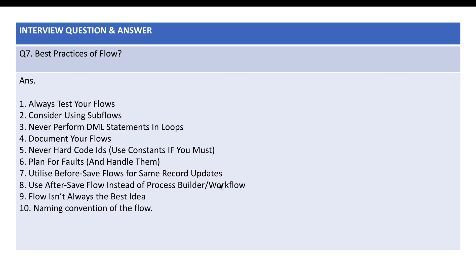Use after-save flow instead of Process Builder or Workflow — after-save means when you will get a record ID. Also, one very important point: flow isn't always the best idea. If you are saving an account and you have 10 flows running, that is not a best practice. Sometimes it's fine, but you should have a strong reason if you are creating multiple flows.